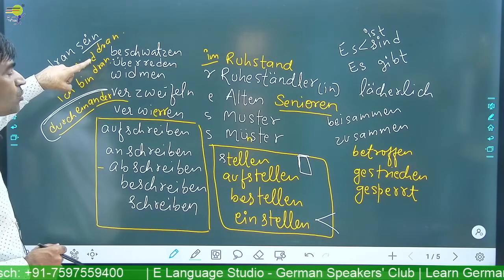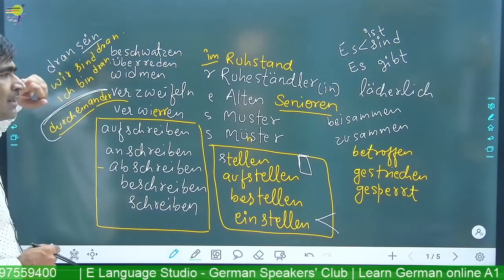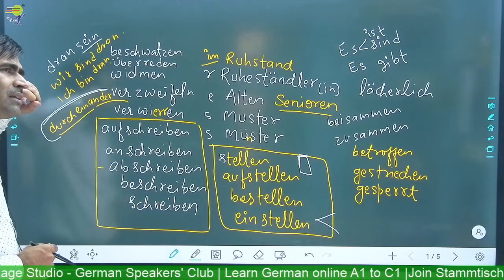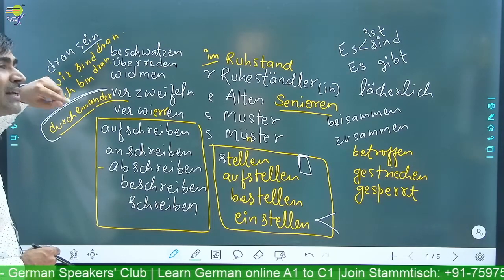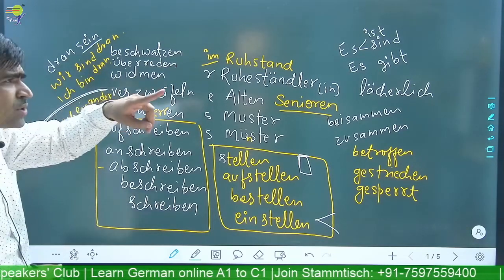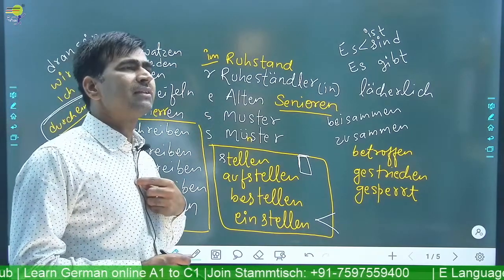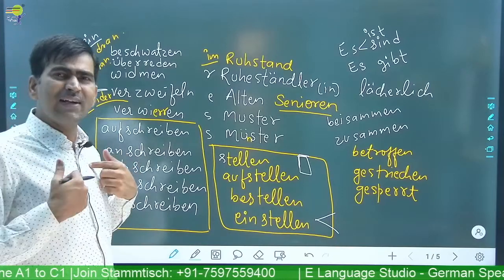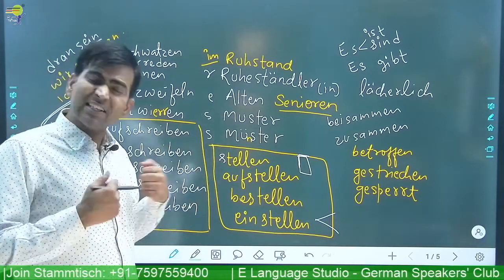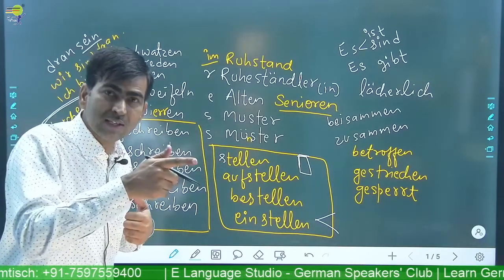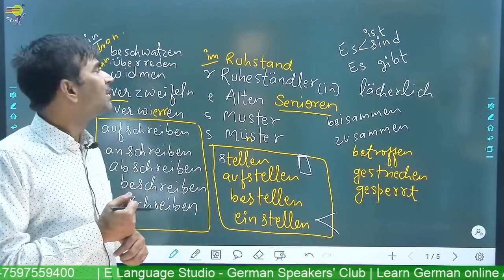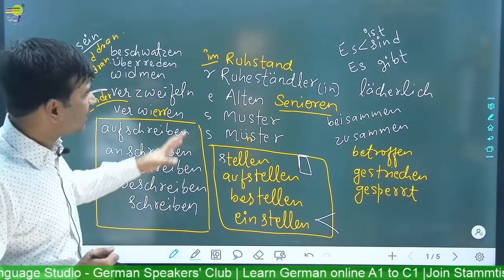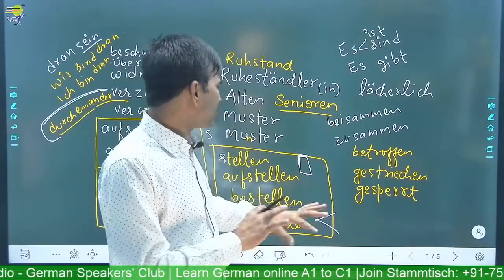Dran — to turn. Which number is where? Wer ist dran? It is my turn — it is our turn. Ich bin dran — we are dran. By the same time together.